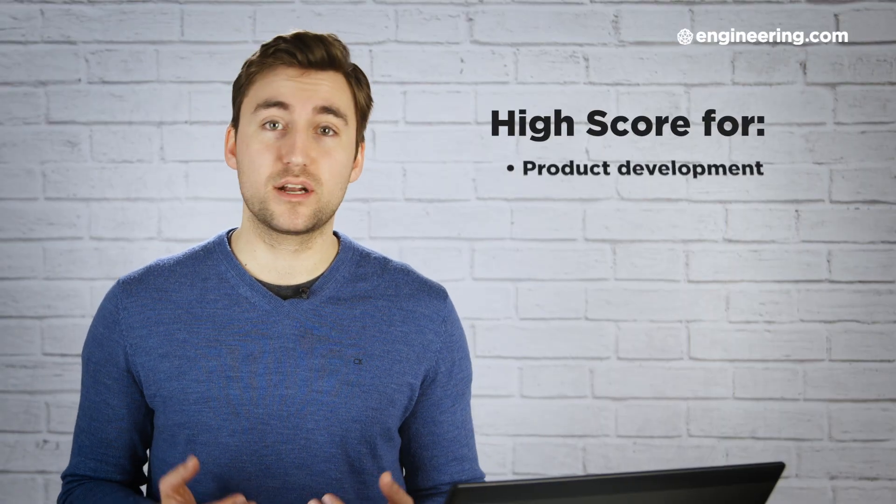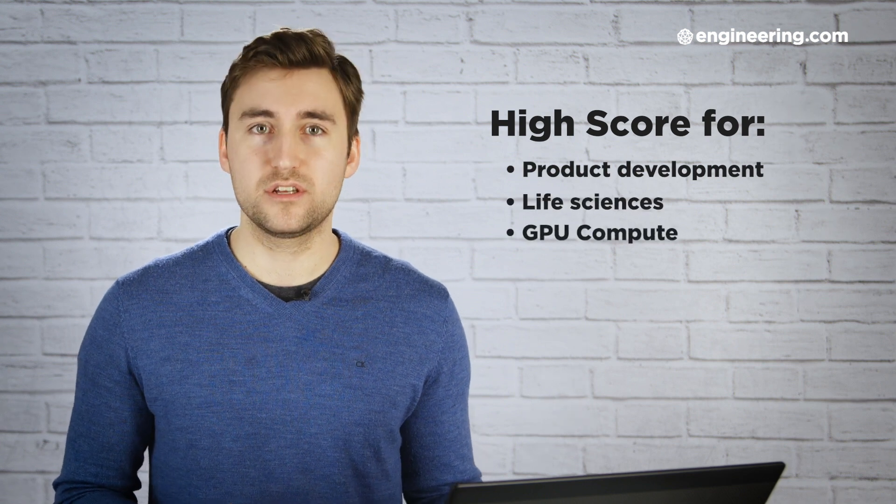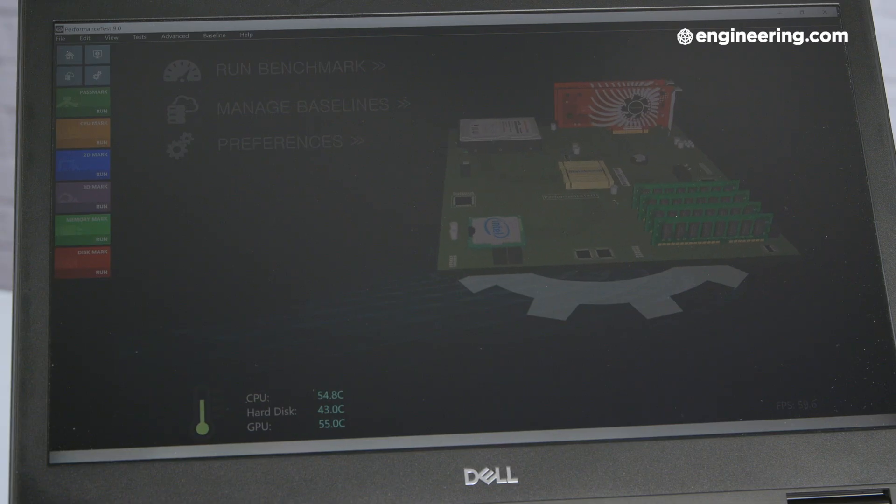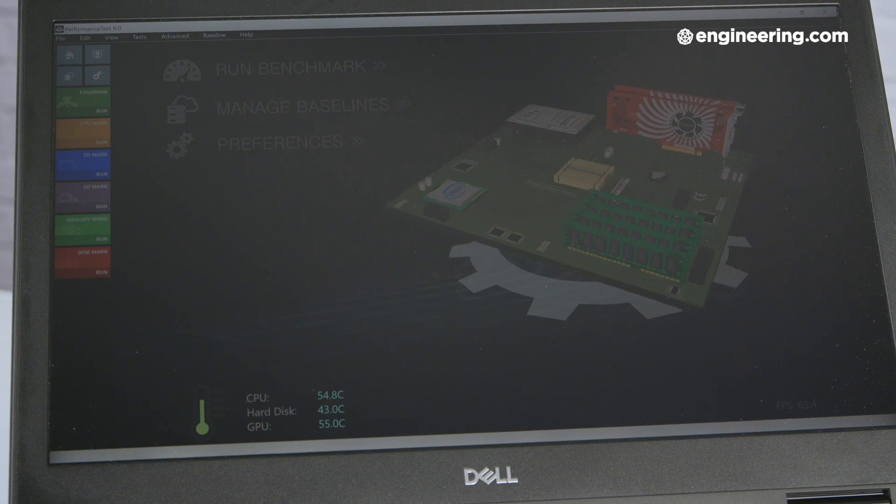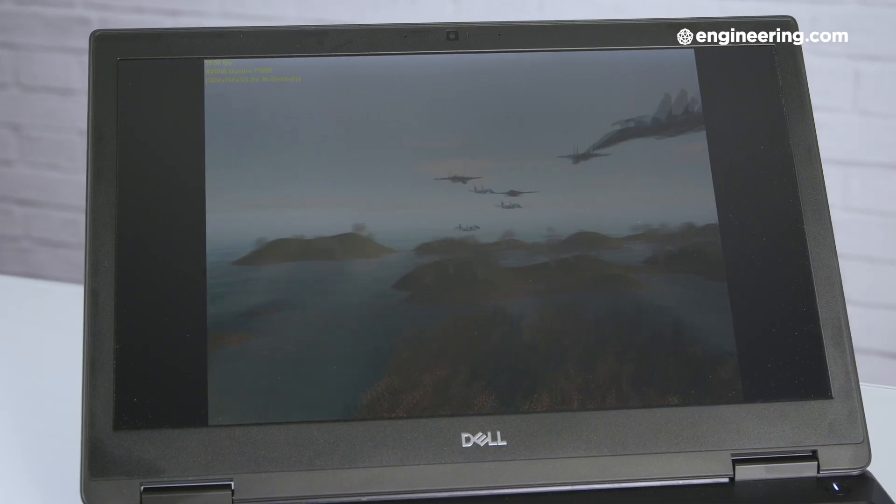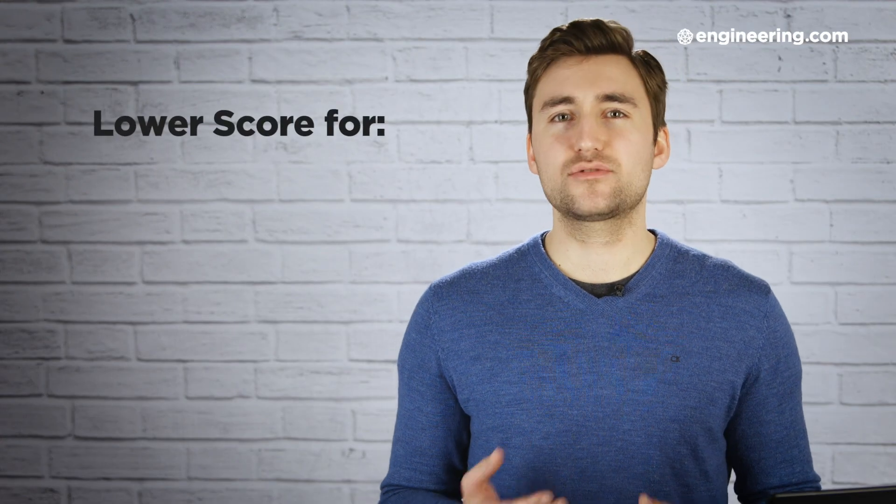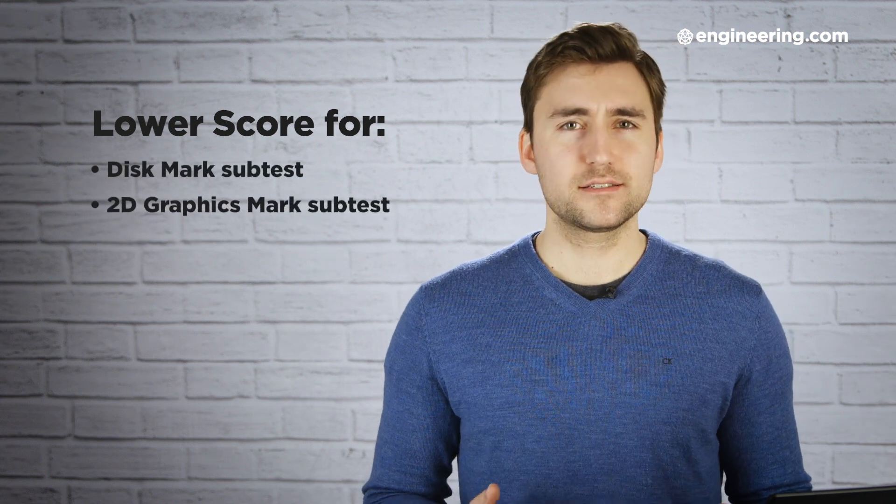We also ran Spec Workstation 3, a benchmark of the computer's general workstation capabilities across different industry segments, such as media and entertainment and product development. The 7530 crushed it again, scoring particularly high in product development, life sciences, and GPU compute, although it did falter in the general operations segment. That actually foreshadowed our next benchmark, PassMark Performance Test, which is another general-purpose probe into a computer's performance. The 7530 actually came out with a lower PassMark rating than I would have expected based on its high specs, and it struggled the most in the DiscMark and 2D Graphics Mark subtests. So it seems the 7530's real strength is in its optimization for those pro applications tested in the spec benchmarks.